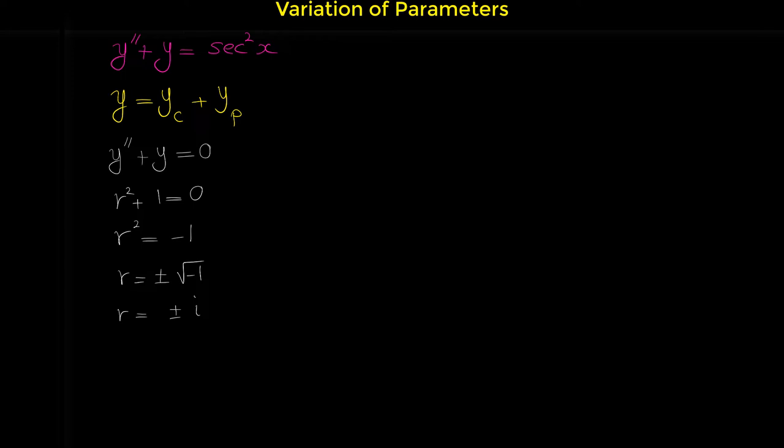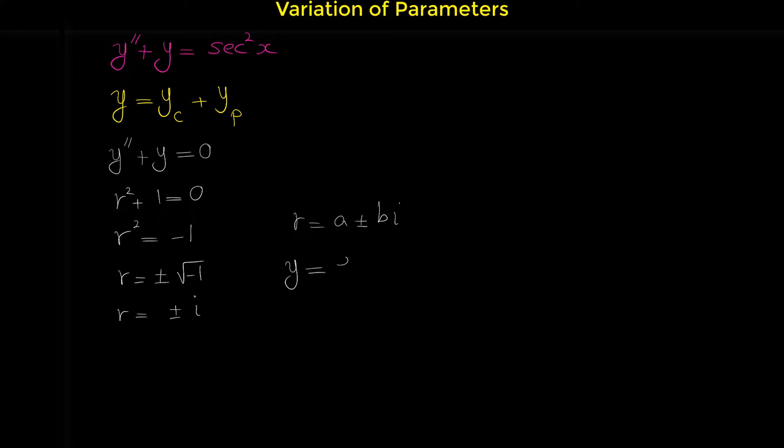Because here we have two complex roots, we use this formula for writing the complementary solution. When we have complex roots in the form of a plus or minus bi, the solution is e to the ax times c sub 1 cosine bx plus c sub 2 sine bx.